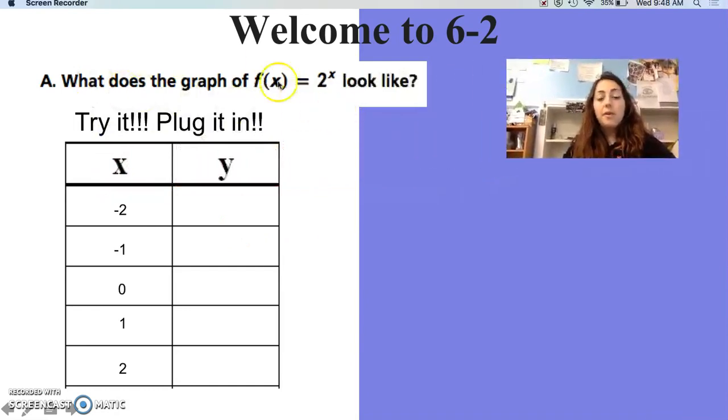We're looking at the graph f(x) equals 2 to the x power, and we're wondering what is that going to look like. This tells you it's exponential - look where your x is. X is your exponent. It's an exponential function. If it were just 2 times x, that would be linear. The exponent is super important.